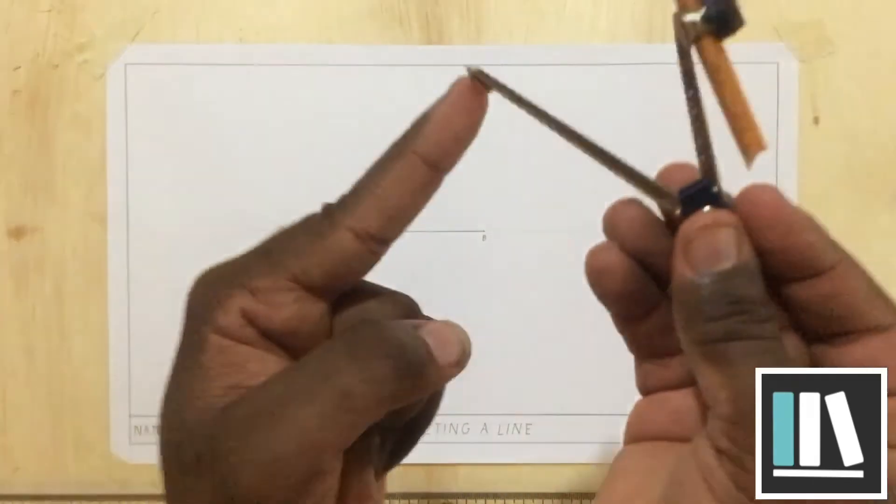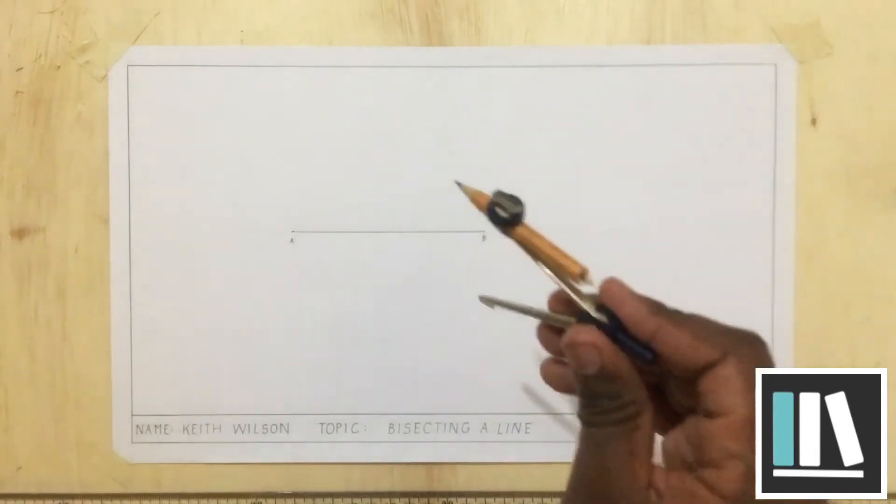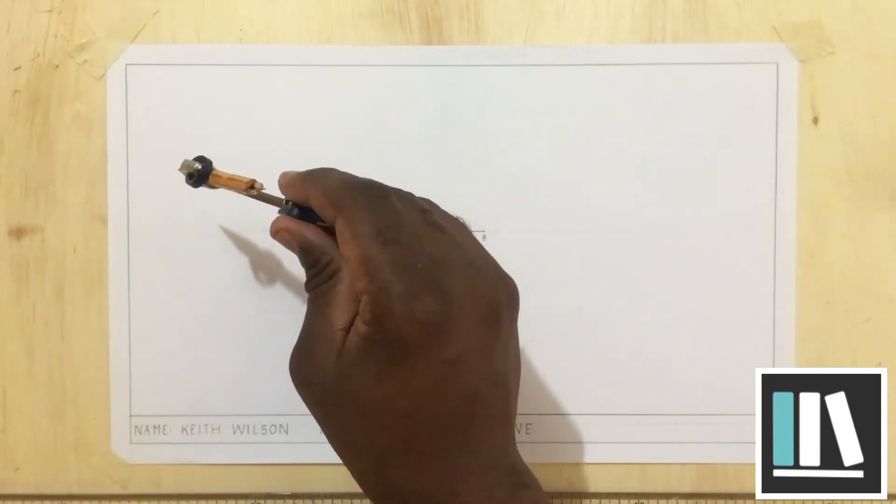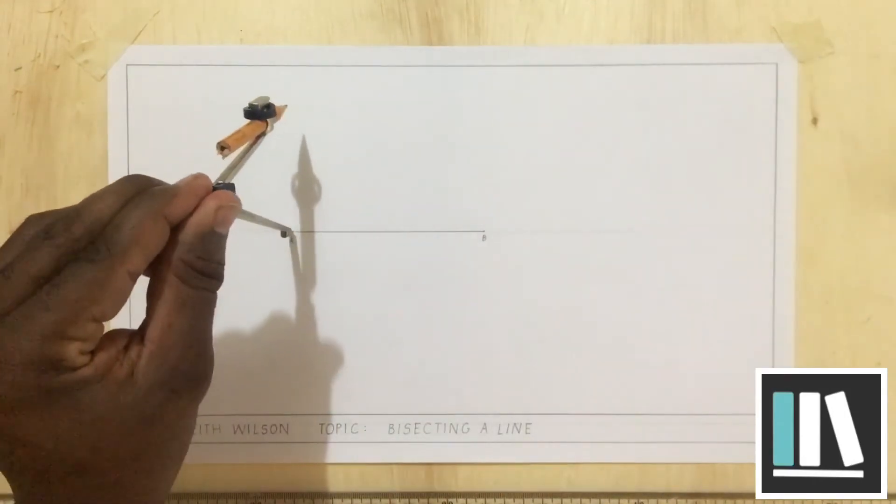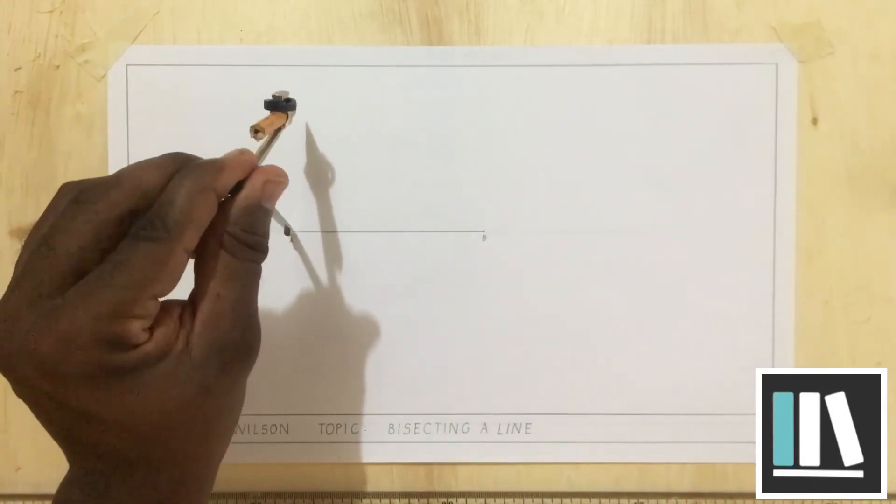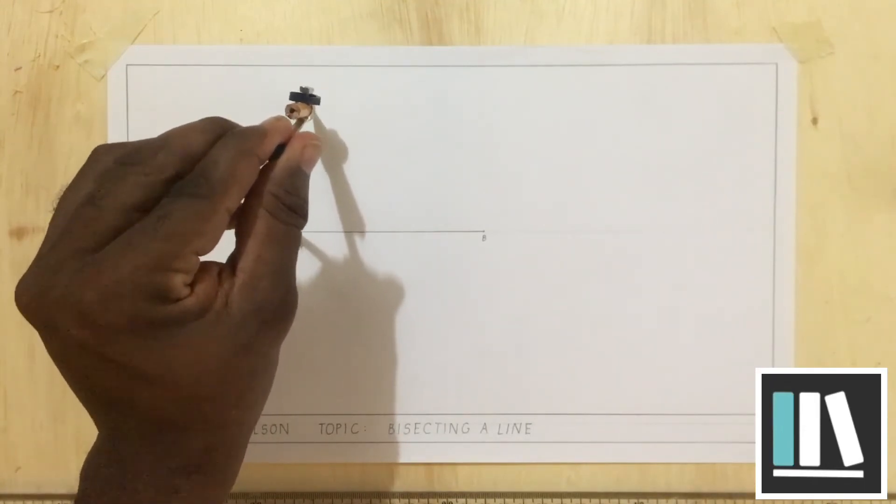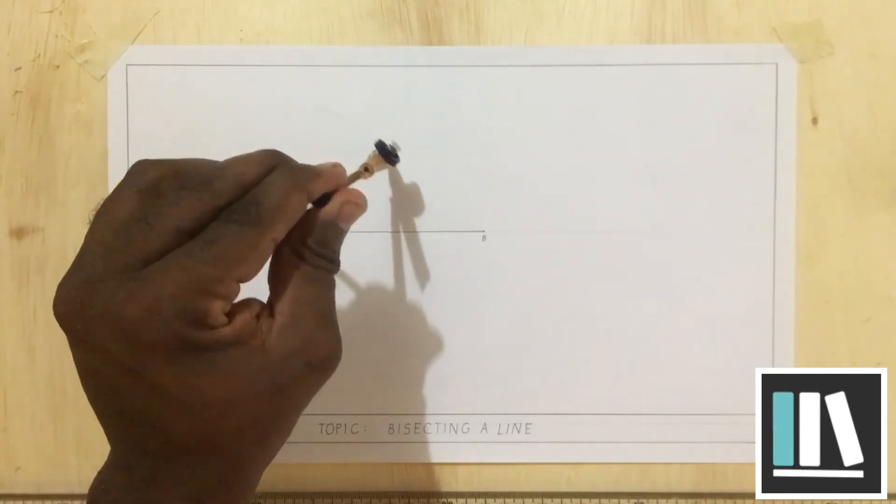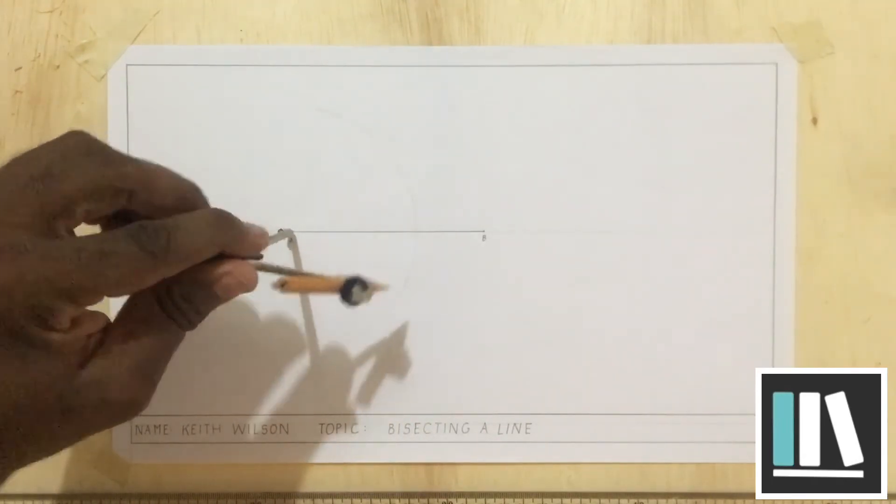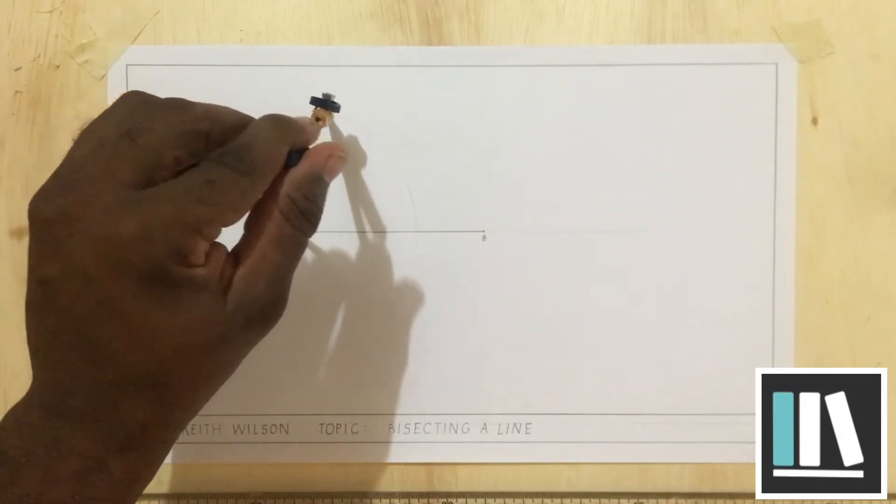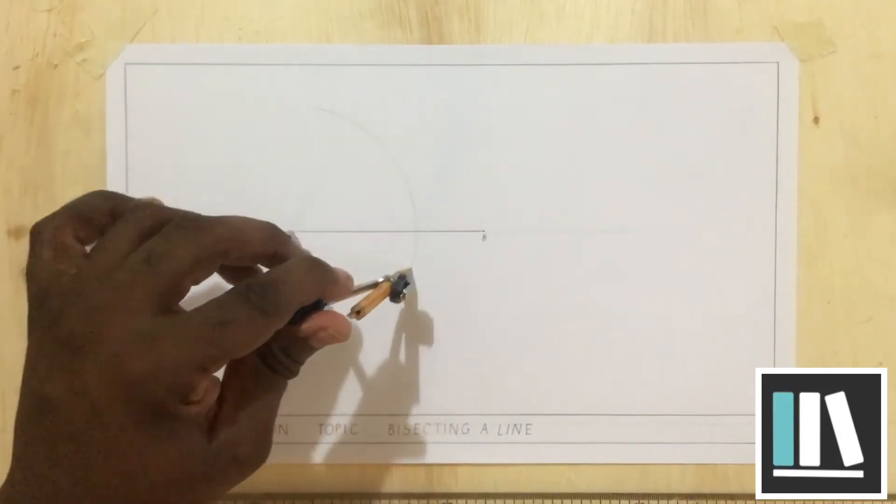You are going to place the compass point at any of the starting points. I am going to start with point A. You can start with point B if you wish. I am going to go ahead and swing an arc. Hopefully, you can see that arc.